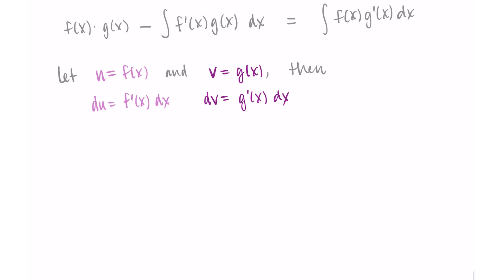So first I have f times g. So using my substitution, that's going to be u times v. Then I subtract the integral of f prime times g. And so here, my g of x is going to be my v. And then the f prime of x dx is my du. So we've so far simplified the left-hand side of this equation. Let me highlight some of the colors just to make sure you're seeing the substitution.